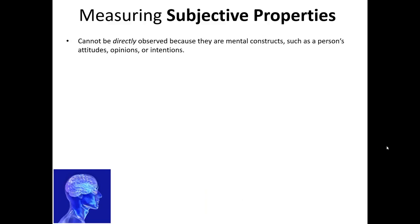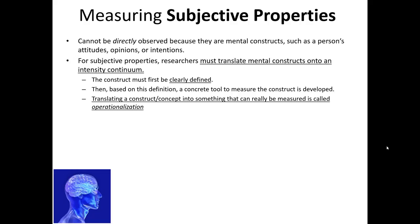If we understand that subjective properties are not directly observable, one of the things that quickly emerges is that we must find some sort of indirect way to measure these concepts. Therefore, we must take these mental constructs and translate them to some form of intensity continuum. There's an important requirement here: whenever we have a construct, it must be clearly defined. For example, we've been using the word satisfaction as though we have a clear understanding of what it means. If we're going to make a measurement system to measure satisfaction, we must be much clearer in what we mean. This process of translating a clearly defined construct into a concrete measurement tool is called operationalization.